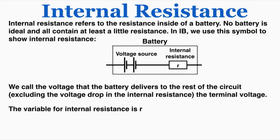The variable for internal resistance is lowercase r. Before this we were using capital R for resistances; for internal resistance specifically we use lowercase r. In all previous problems, the voltage we've been talking about has really been the terminal voltage of the battery — just the voltage that the battery gives to the rest of the circuit, excluding the voltage drop that occurs within the battery itself.